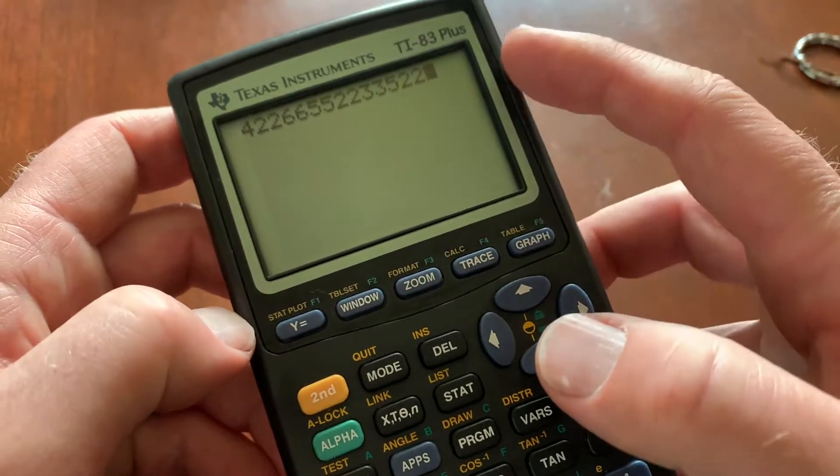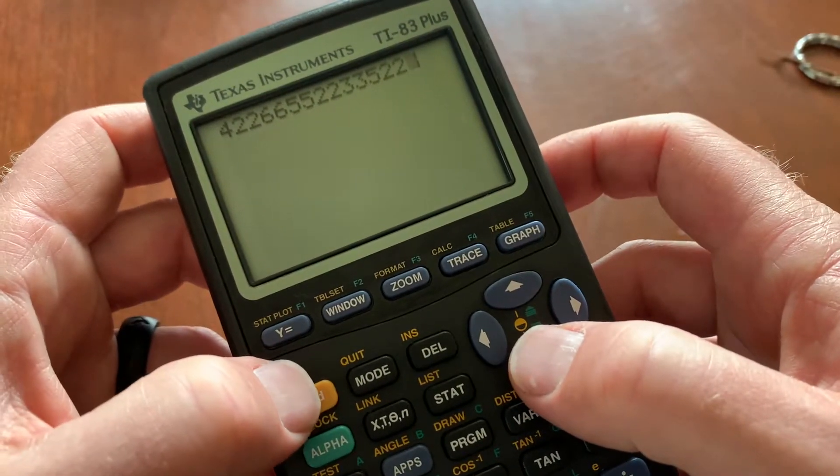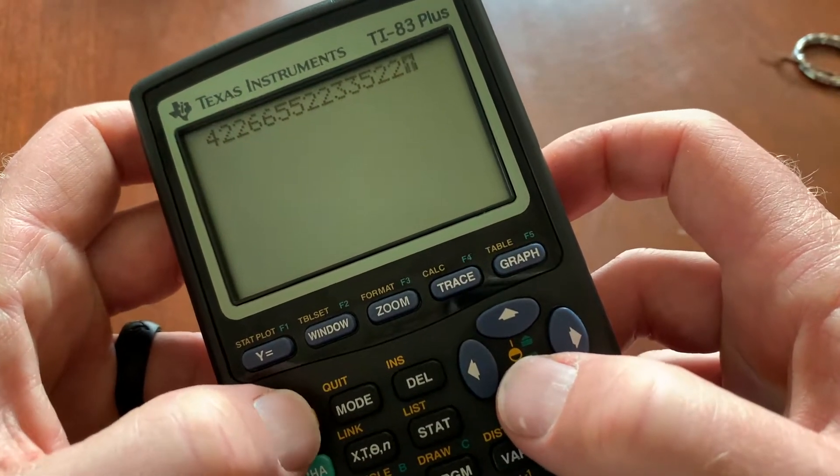Hit second, hit down. As you can see, that went to an eight. Second down, seven, six, five.